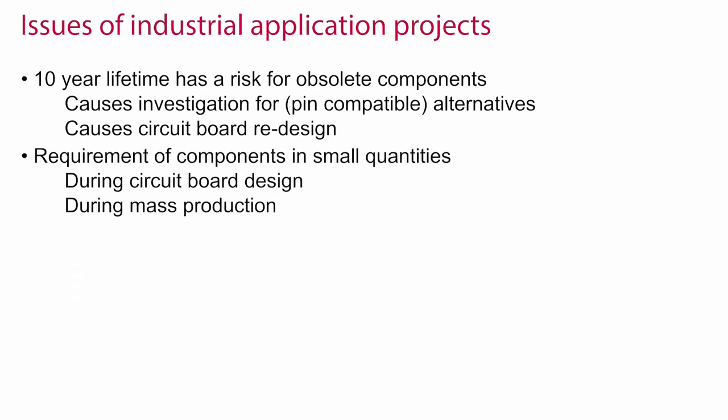Another issue is the availability of components in small quantities during development as well as production, because industrial products will not have large mass production volumes like smartphones. Often components are sold on reels with volumes of 3000 or 5000 pieces, which is way too much for industrial applications. As a result, it is inefficient to trade with excess stock from a time and cost point of view.